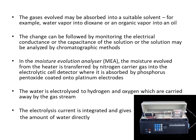Another technique is the Moisture Evolution Analyzer (MEA). The moisture evolved from the heater is transferred by a nitrogen carrier gas into an electrolytic cell detector, where it is absorbed by phosphorus pentoxide (P₂O₅), which is hygroscopic in nature. This phosphorus pentoxide is coated onto platinum electrodes. The absorbed water is then electrolyzed to hydrogen and oxygen, which are carried away by the gas stream, and the electrolysis current is measured.